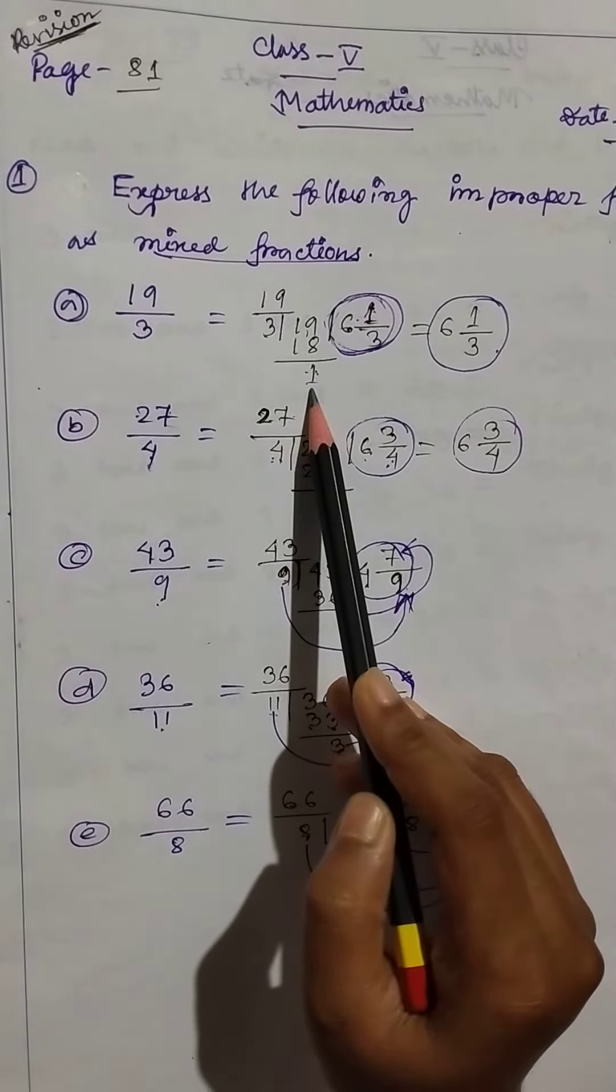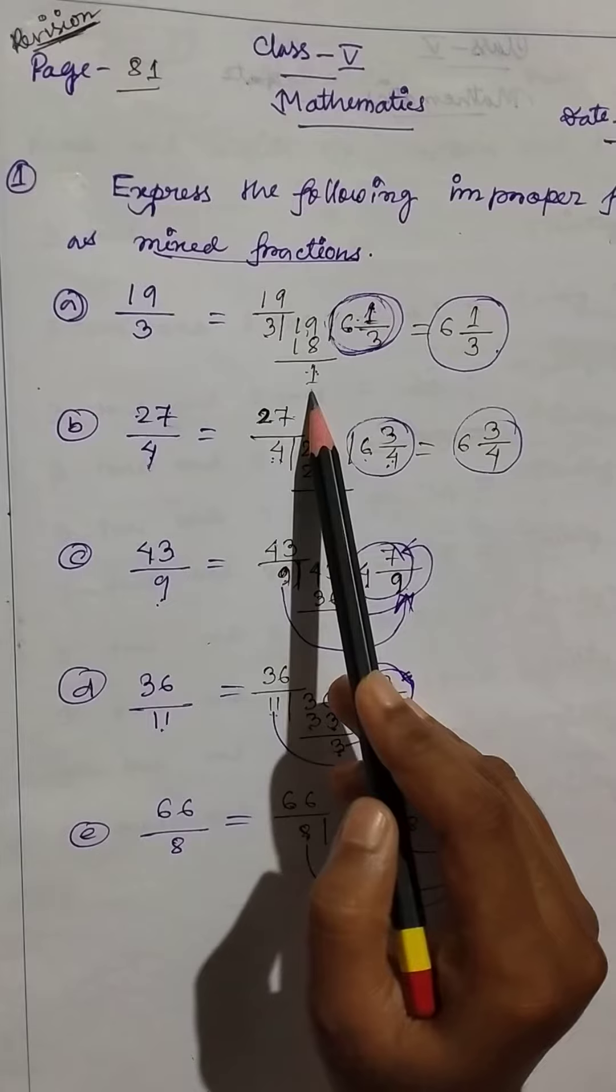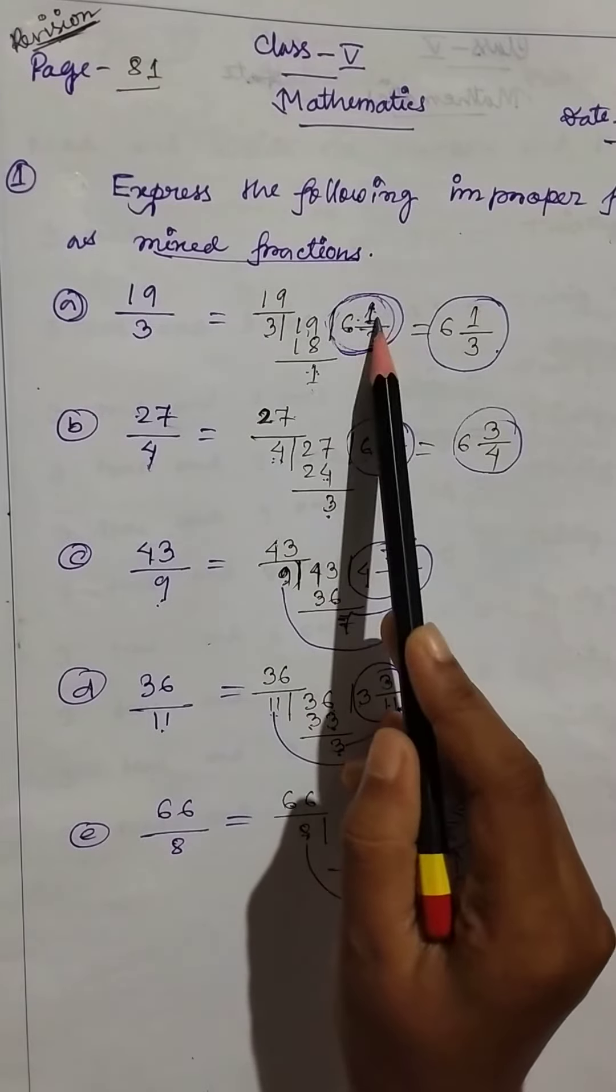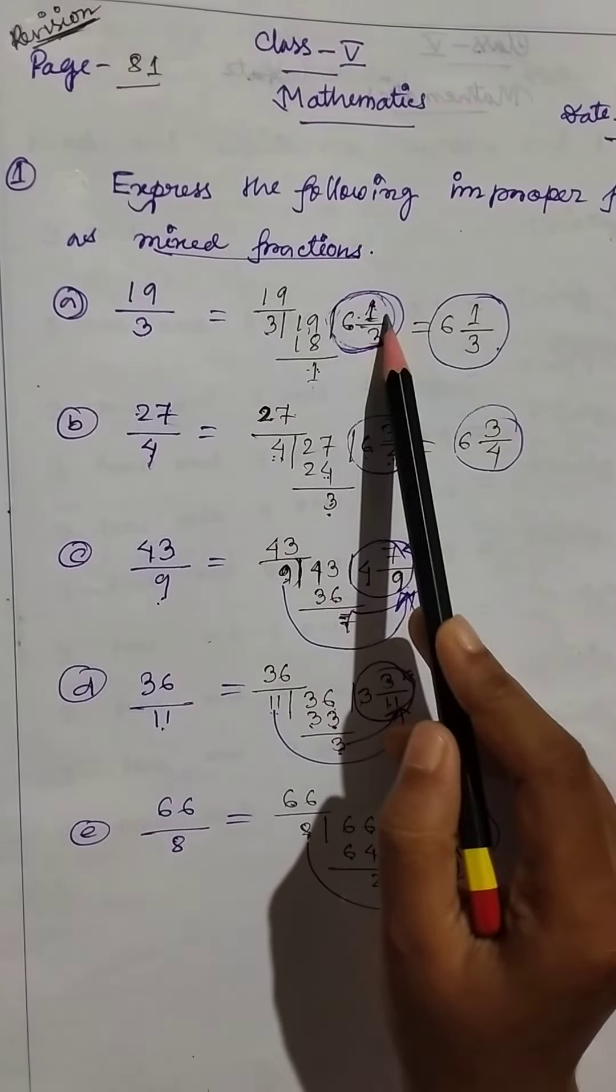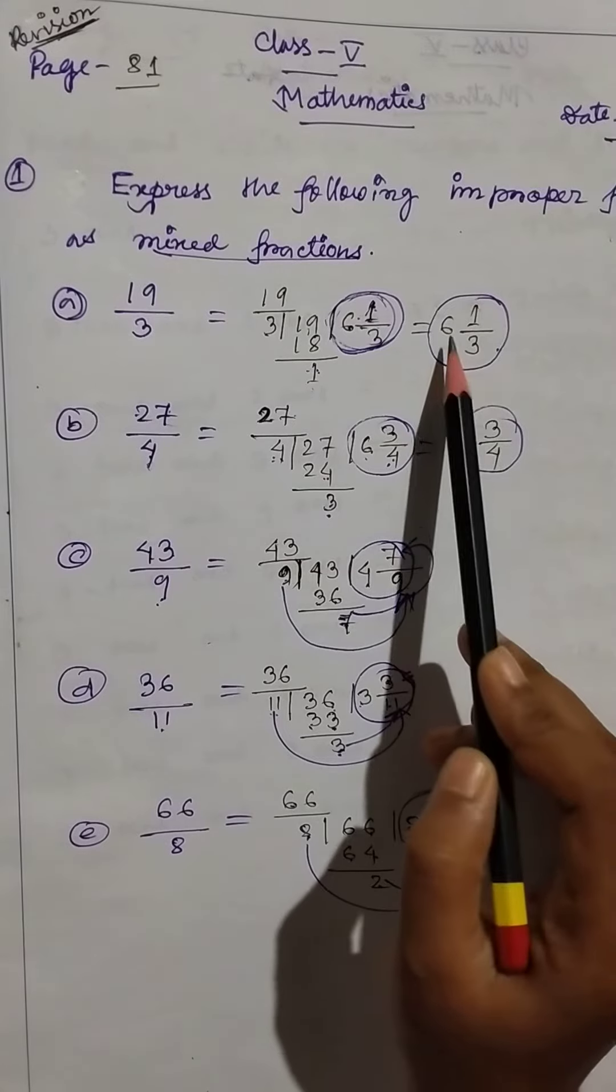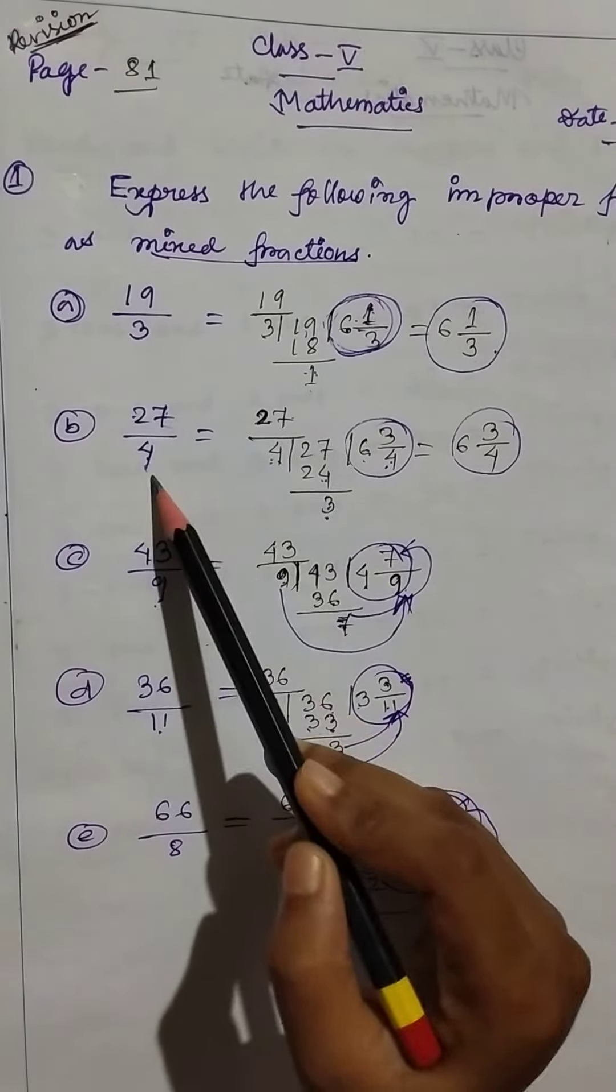Here remainder. Okay, so 1 here, 1 jabe upore, 3 niche. Okay, so 6 1 by 3. Then 27 by 4.